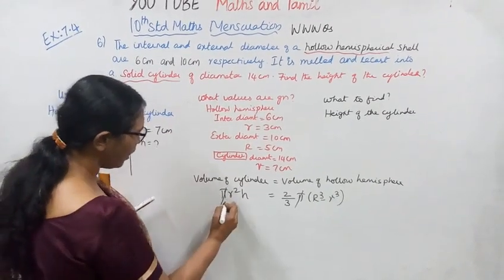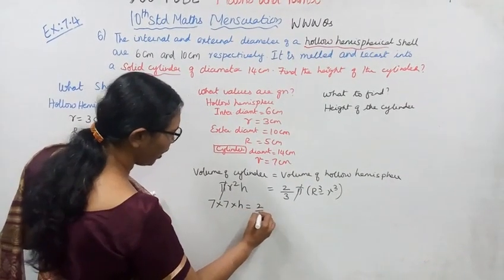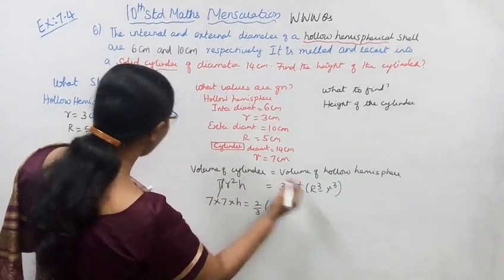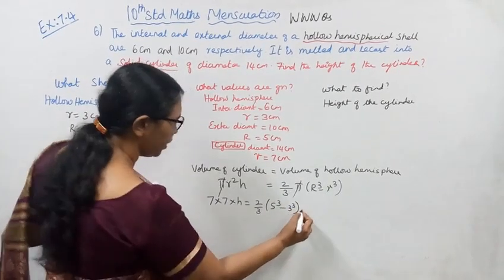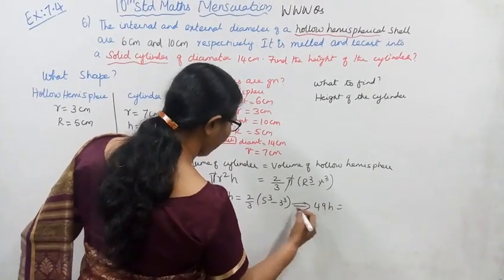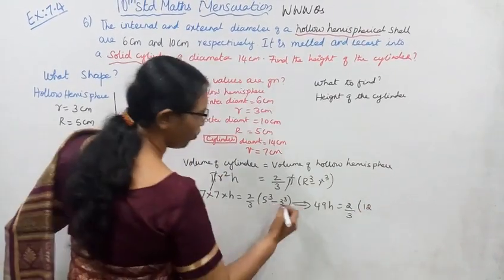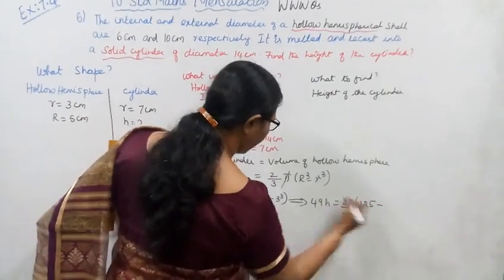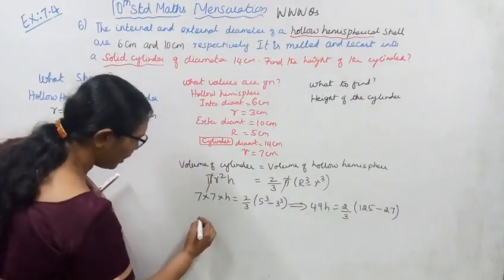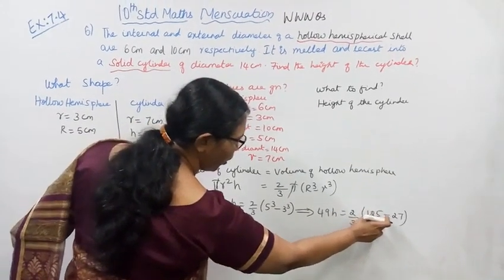The cylinder radius is 7, so r squared is 7 into 7. H equals 2 by 3, capital R equals 5, so 5 cubed minus small r 3 cubed. That implies 49h equals 2 by 3 into (5 cubed). 5 into 5 into 5 is 125, minus 3 into 3 into 3 is 27. So 49h equals 2 by 3 into (125 minus 27).